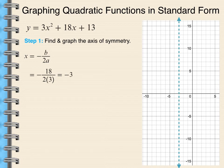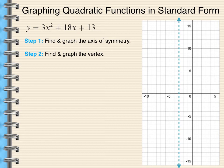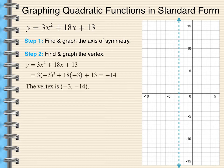Now we want to find and graph the vertex. And remember, the x-coordinate of the vertex is going to lie on that axis of symmetry. So I'm going to substitute negative 3 in place of x to find the y-coordinate. So I get negative 3 times 9 minus 54 plus 13. My y-coordinate when x equals negative 3 is negative 14. So I go ahead and I plot that point.